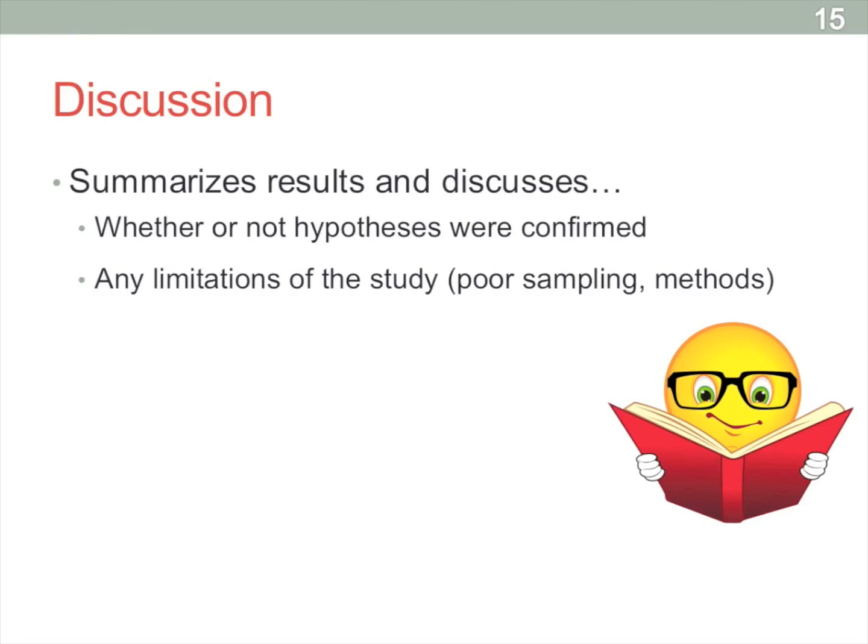And very importantly, they're going to discuss all the limitations of the study. Or at least, hopefully, the main limitations of the study. So for example, this study didn't have a very good sample. So they were just psychology undergrads. Could we take the results from the sample and extrapolate them to or apply them to a more general sample of maybe older adults or even younger children? Probably not.